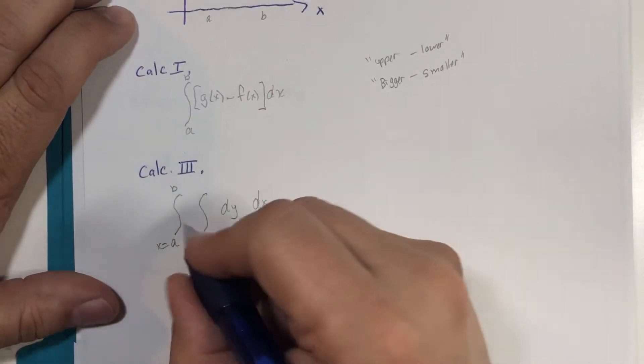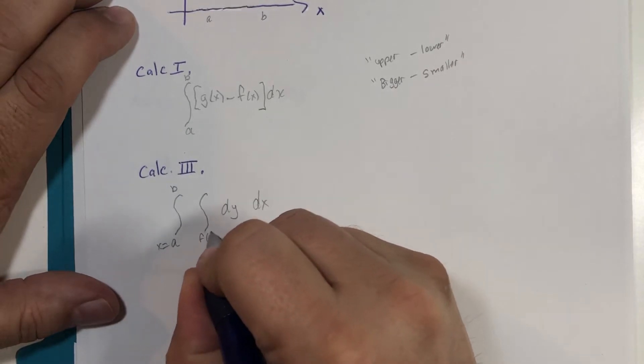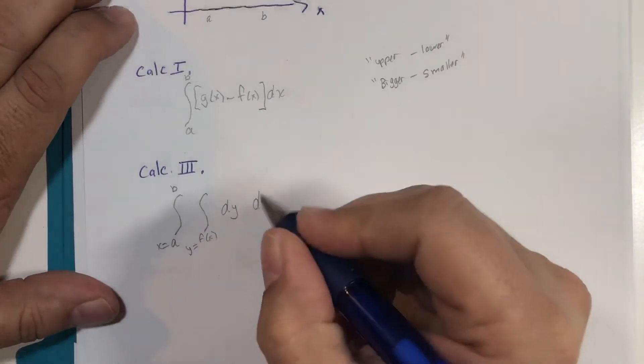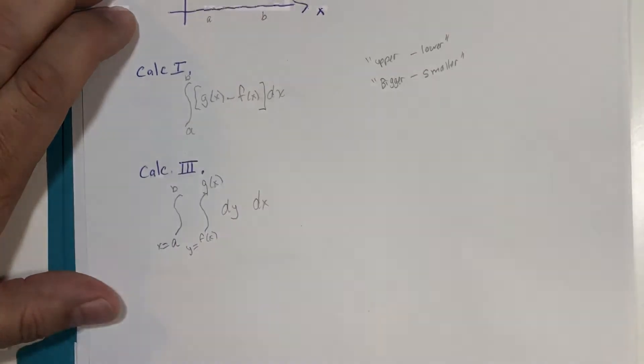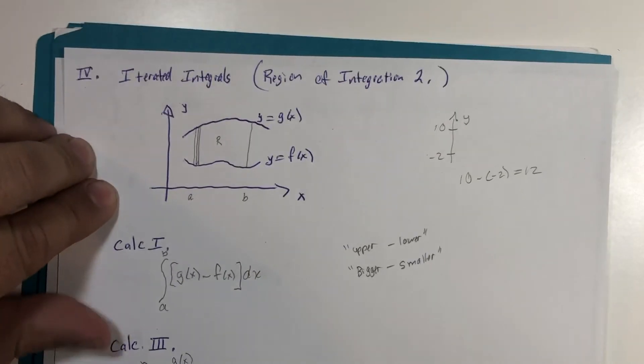The lower y value is f of x, y equals f of x, and the upper y value is y equals g of x. And I claim that these are the boundaries for this same region of integration, also called the limits of integration.